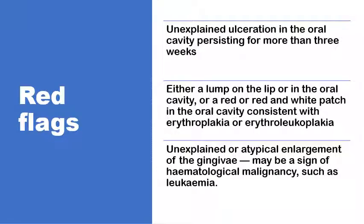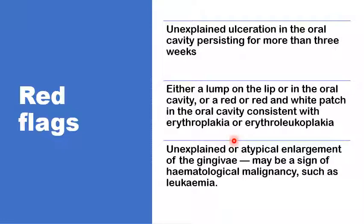In the management of halitosis, there are some red flags that may be associated with sinister pathologies, including unexplained ulceration of the oral cavity persisting for more than three weeks, a lump in the lip or oral cavity, discoloration with red or red-and-white patches consistent with erythroplasia or erythroleukoplasia, or unexplained atypical enlargement of the gingiva that may be a sign of hematological malignancies such as leukemias.